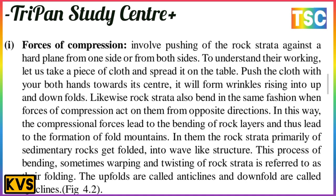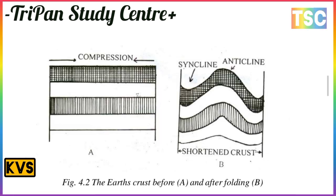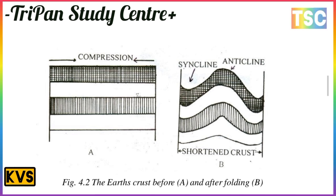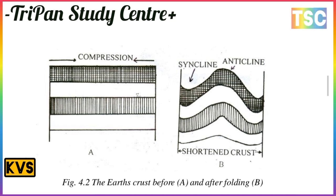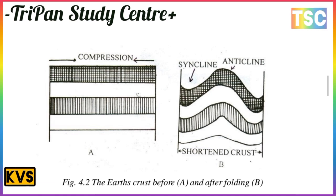This process of bending, warping, and twisting of rock strata is referred to as folding. The upfold is called an anticline and the downfold is called a syncline. The diagram shows the earth's crust before and after folding. The first diagram shows the original crust, and the second shows the shortened crust with anticlines and synclines.